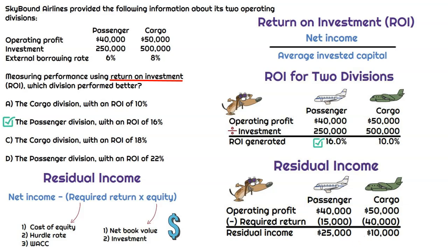Passenger delivered again with a higher residual income. On the surface it looks like passenger contributed less, since they only had operating profit of $40,000 compared to $50,000 for cargo. But look how much investment was needed just to generate that $50,000 of operating profit for cargo — it's actually double what it took for passenger. So passenger is more valuable because they generated a higher level of operating profit on a lower investment. That is how we use residual income to compare from a dollar perspective. If we want the percentage perspective, that is where we go with return on investment.